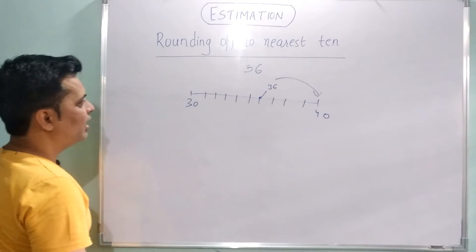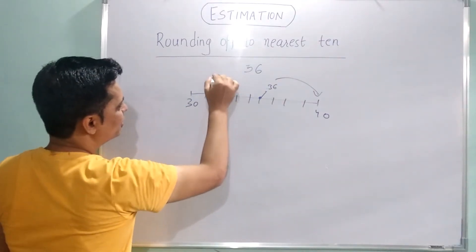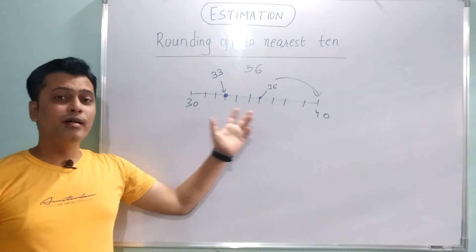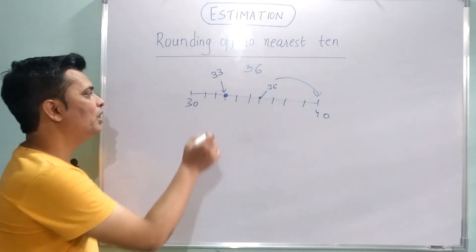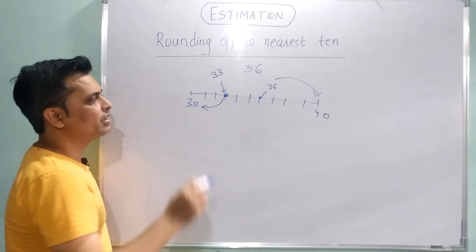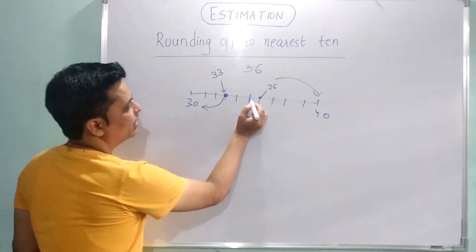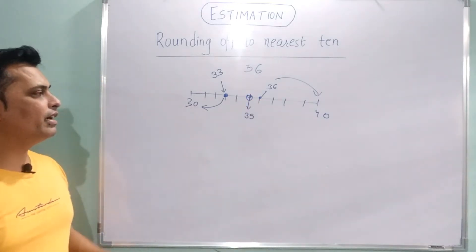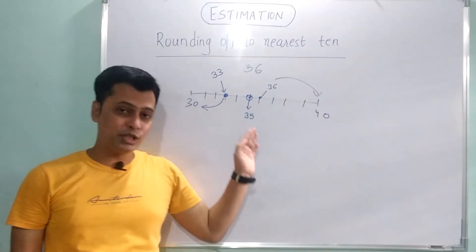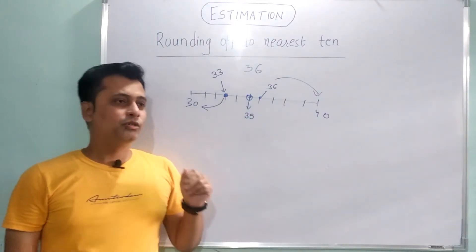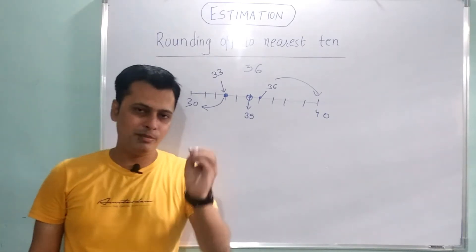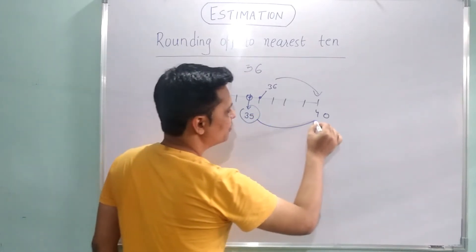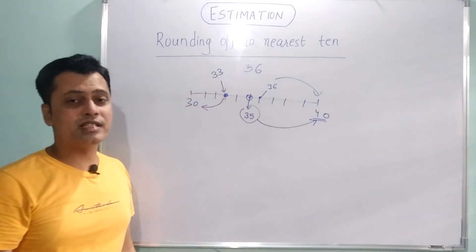40. Okay. Then if there is another number, like 33 — 33 is between 30 and 40, but it is closer to 30. And if the number is exactly 35, which is in the middle of 30 and 40, we round it up. So 35 rounded to the nearest 10 is 40.